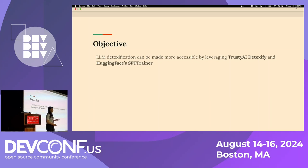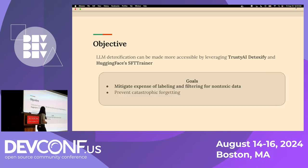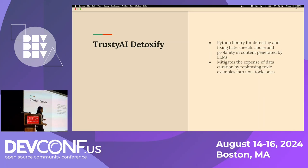My objective for this talk is to show you how LLM detoxification can be made more accessible through Trusty AI Detoxify and Hugging Face's SFT Trainer. Our first goal is to mitigate the expense of labeling and filtering for non-toxic data. We can do this via Trusty AI Detoxify, which is a Python library for detecting and fixing hate speech, abuse, and profanity in content generated by LLMs. It mitigates the expense of data curation by rephrasing toxic text examples into non-toxic ones, completely circumventing the need for human annotators.